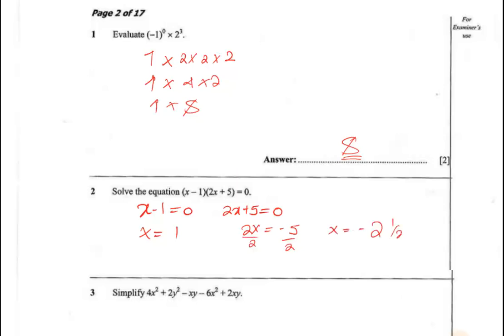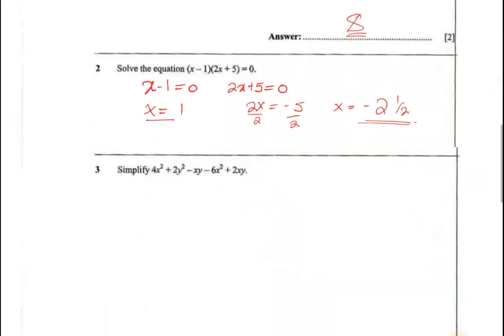Question 3: Simplify 4x² + 2y² - xy - 6x² + 2xy. We're collecting like terms here, so we have 4x² minus 6x² plus 2xy² minus xy plus 2xy. Just grouping the terms together.